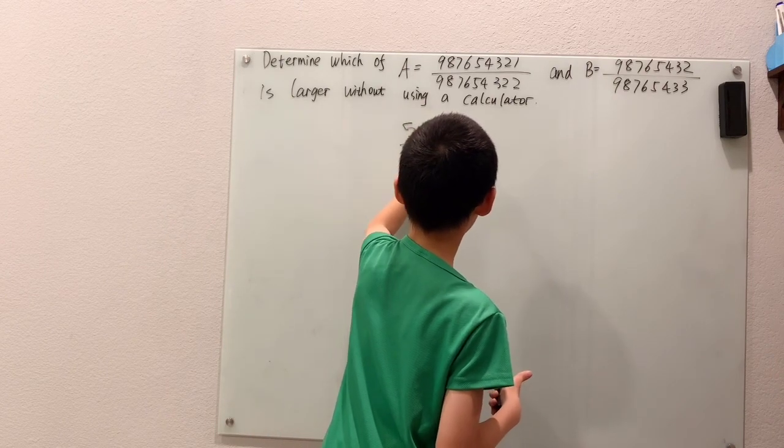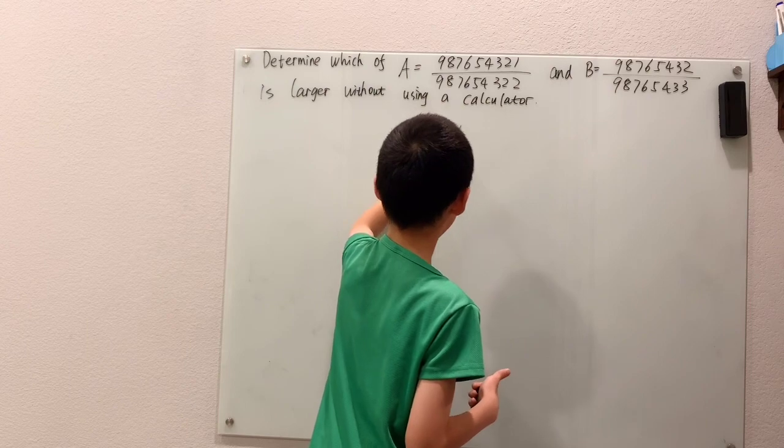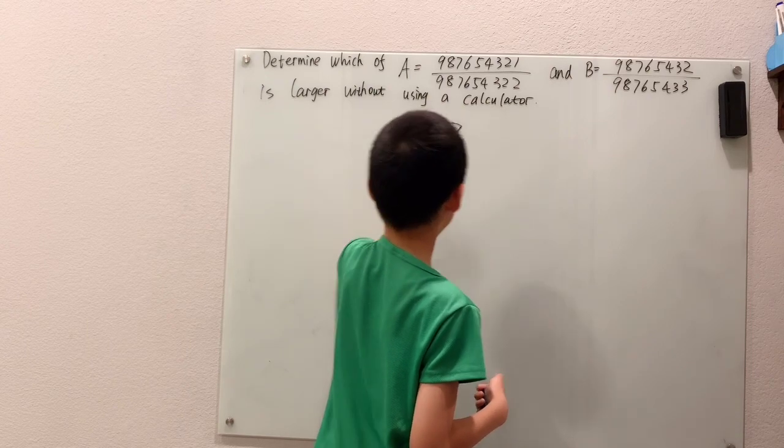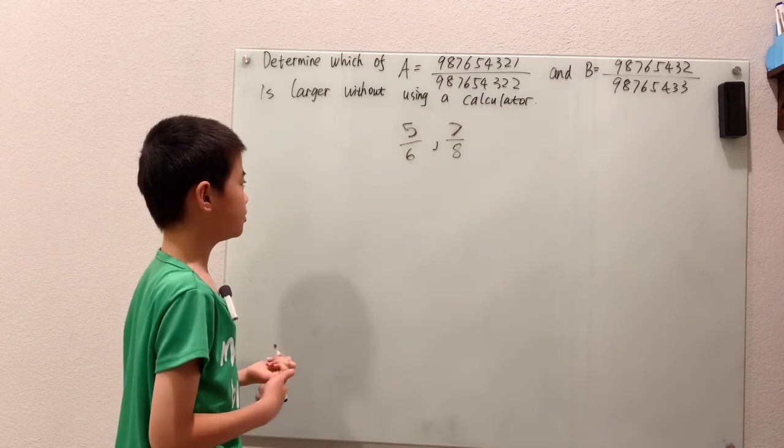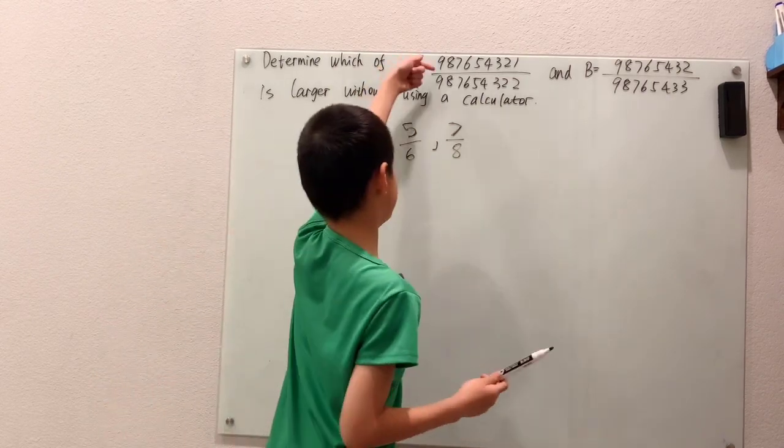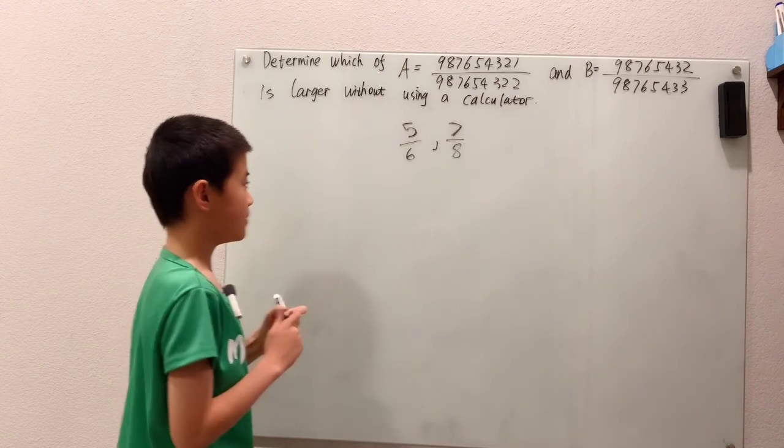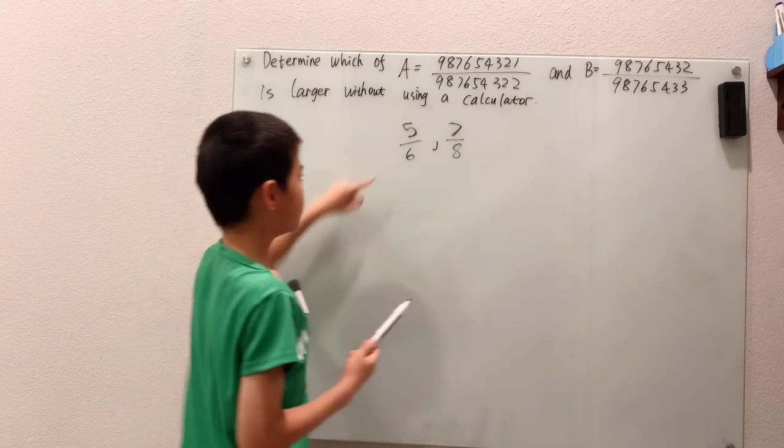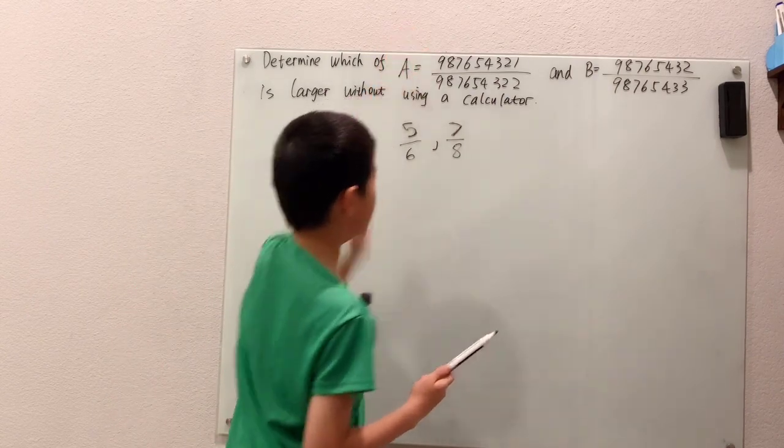Some numerator over a denominator that's one more than the numerator. To compare these, we can use common denominator, but we cannot use common denominator up here—way too large. So we'll do something else, just like we will do up there.